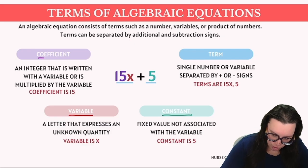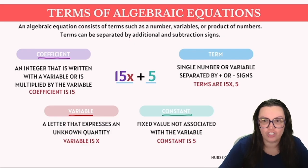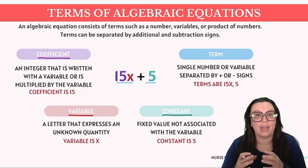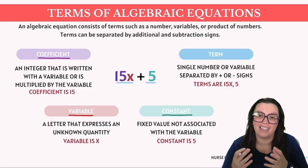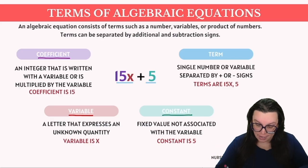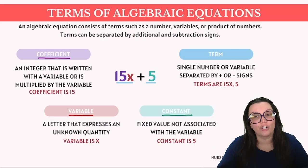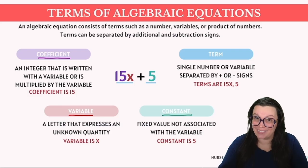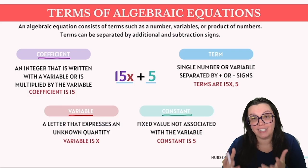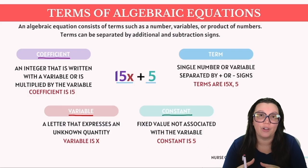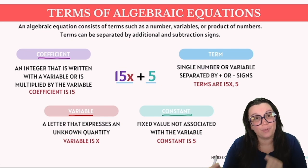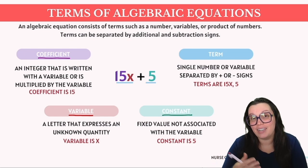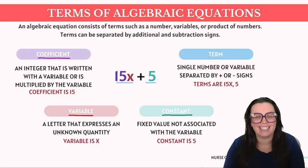Next up we have coefficient. A coefficient is a number that multiplies by a variable within the expression. In our example our coefficient is actually 15. Coefficients and variables are paired together in multiplication relationships, and when they are written, that number or coefficient always precedes the variable.